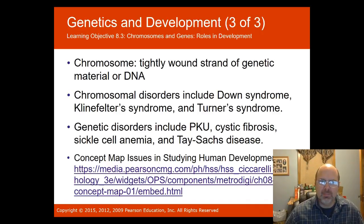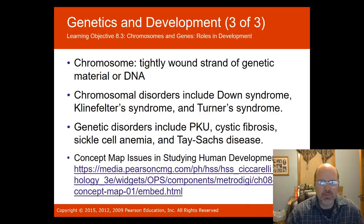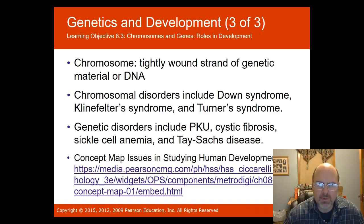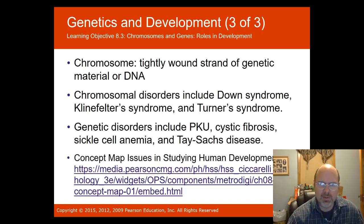A chromosome is a tightly wound strand of genetic material or DNA. Chromosomal disorders include Down syndrome, Klinefelter syndrome — where there is an extra X chromosome in male DNA — and Turner syndrome, where the X chromosome is missing in female DNA. Genetic disorders include PKU, cystic fibrosis, sickle cell anemia, and Tay-Sachs disease.